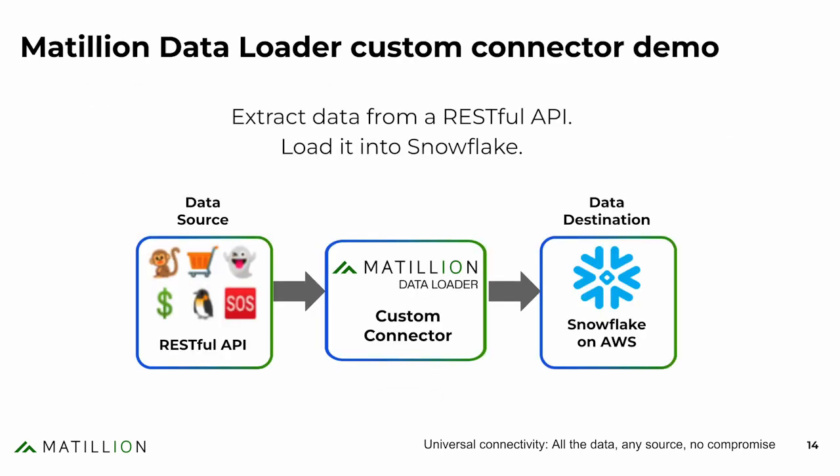Here you can see a high-level architecture diagram. On the left are your data sources like MailChimp, Sendex, and Spotify. You can create a custom connector to one of these applications and use that connector to extract data and load it into your cloud data platform. To demonstrate universal connectivity with Matillion Data Loader custom connectors, I'm going to show you how to build a custom connector, and then I'll show you how to build a data pipeline to extract and load that data into Snowflake on AWS.